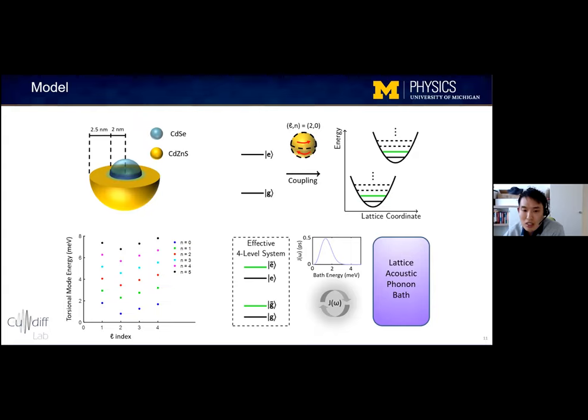And when you have this level system with discrete energies, the effect of a bath is primarily to move the energy levels around and modulate the energy gap in time. So the way we model the effect of the bath is by a quantity called the spectral density J omega. And you can think of this as the frequency spectrum of the energy gap modulation.